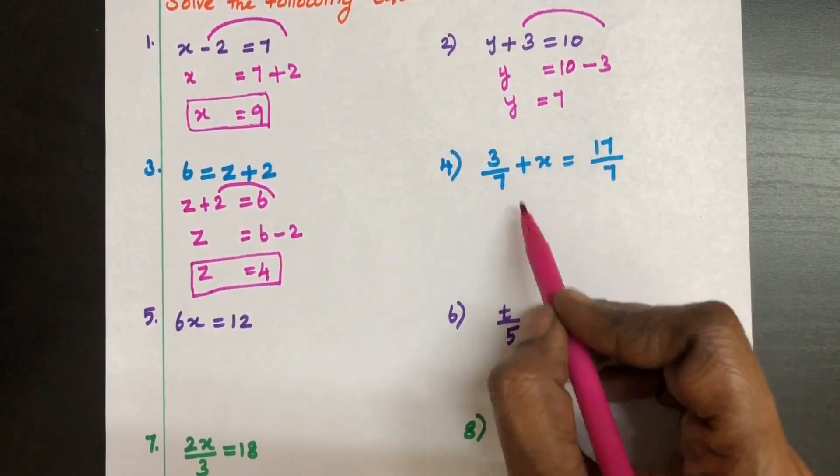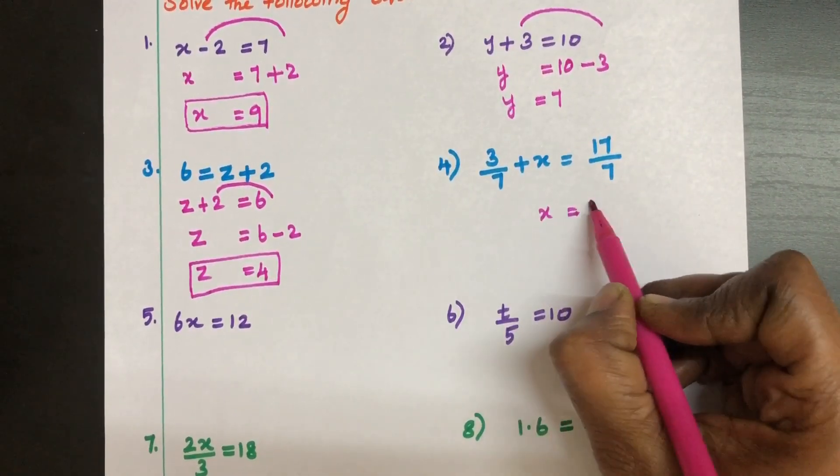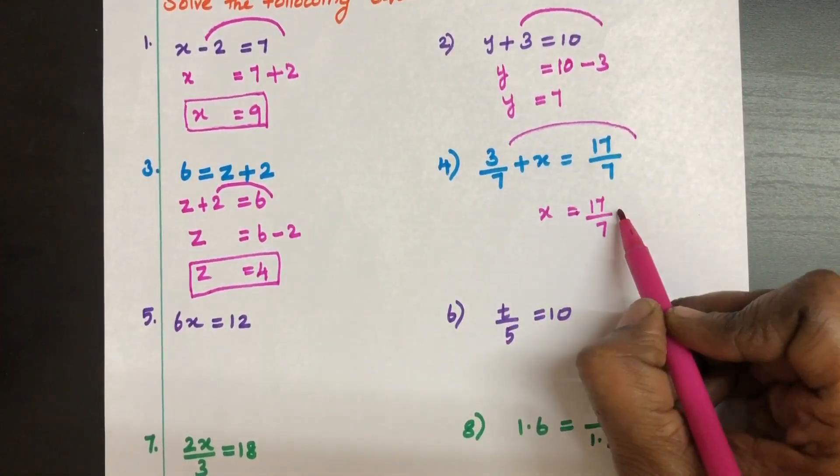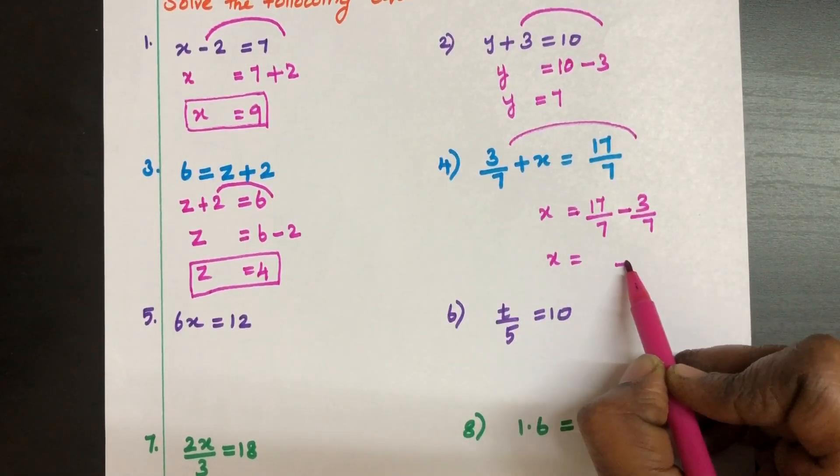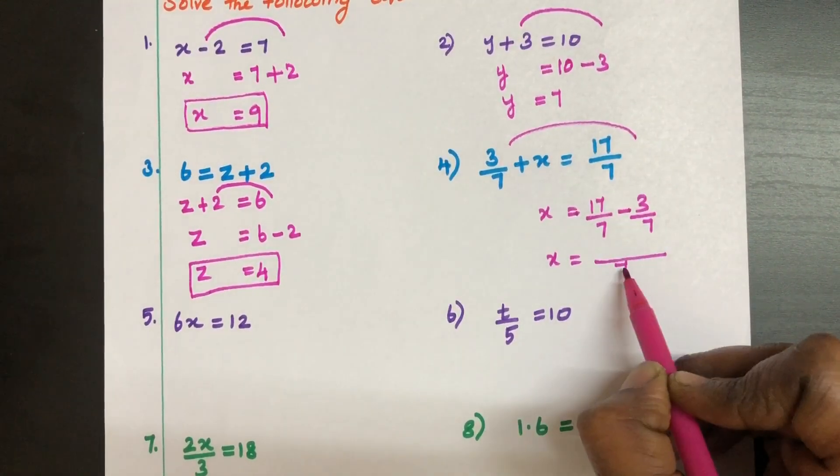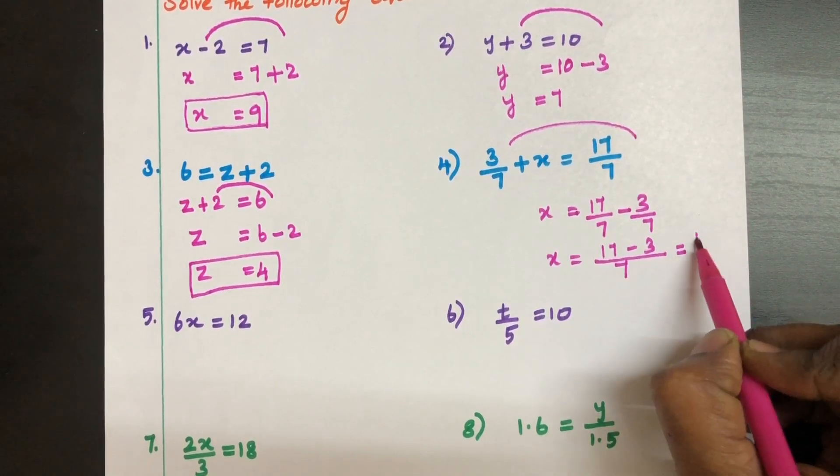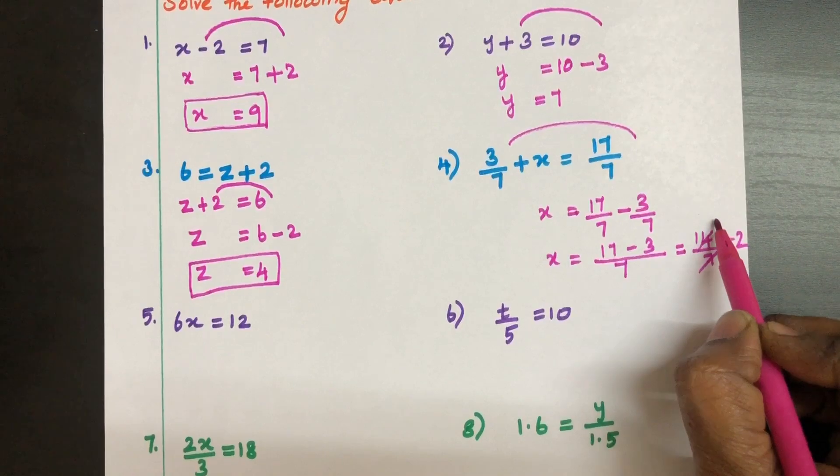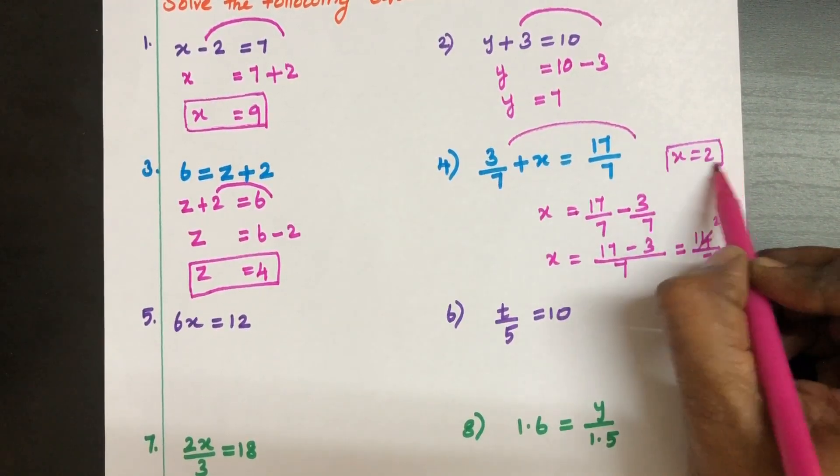Now this one we are going to find the value for X. X equal to 17 by 7, taking this right side minus 3 by 7. Denominators are equal. So we can have a common denominator 17 minus 3. This gives us 14 by 7 which is equal to 2. If we cancel 2 times, X equal to 2 is the value of this variable.